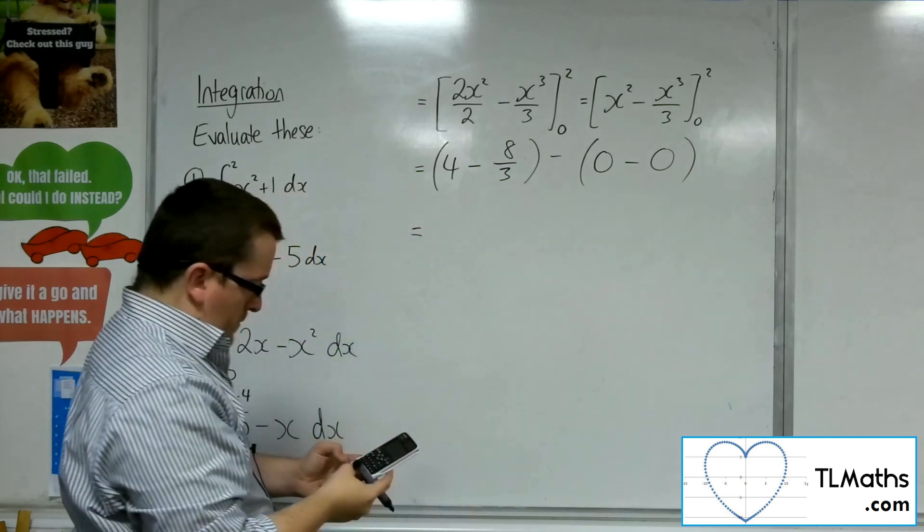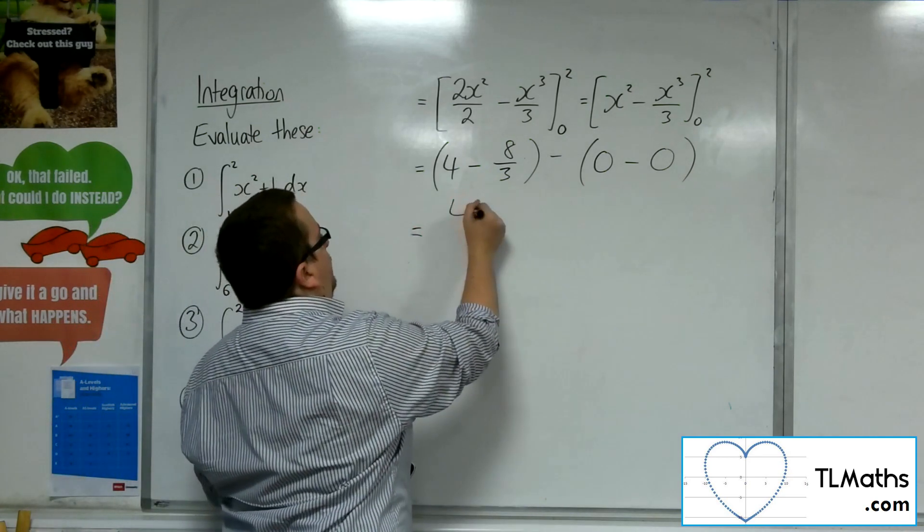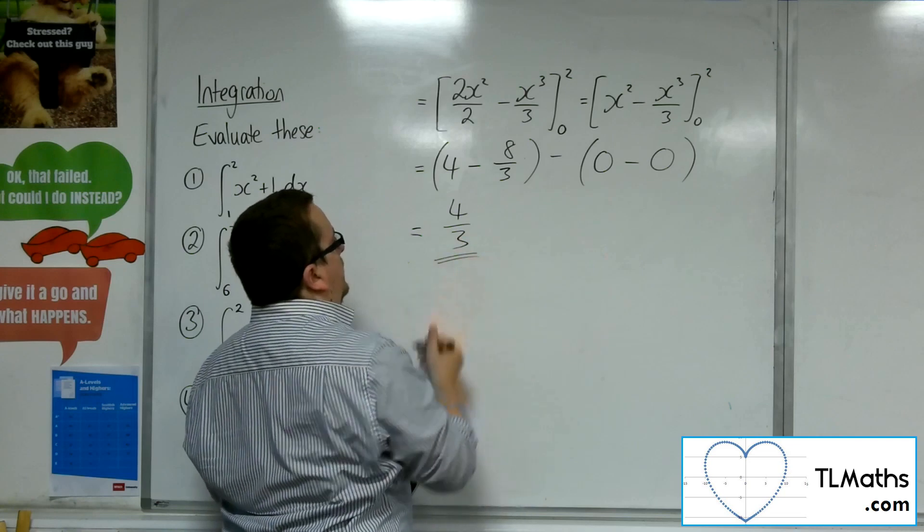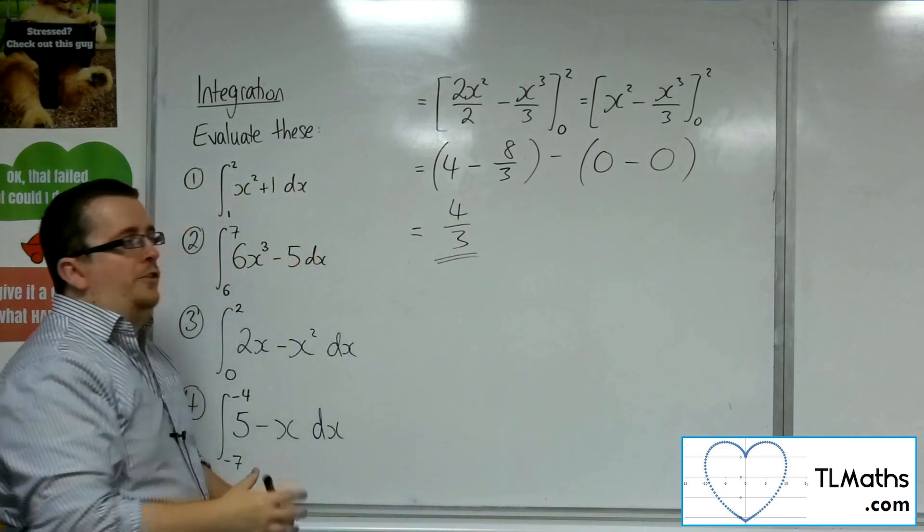So 4 take away 8 thirds is 4 thirds. And that's my answer to question number 3.